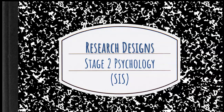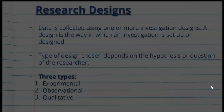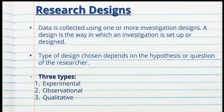Hi everybody and welcome to this revision video on research designs as part of Stage 2 Psychology, the Science Inquiry Skills or CIS. A research design is the way in which data is collected, usually based on the setting. Data is collected using one or more investigation designs in psychology. There are three types of research designs that you need to know about: experimental, observational, and qualitative.